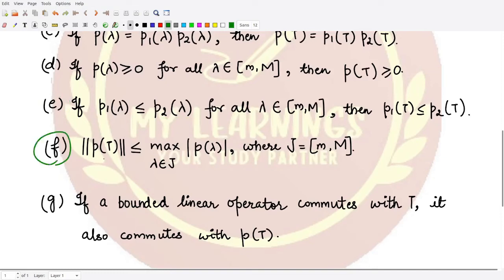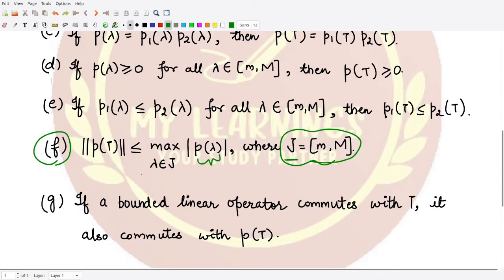The sixth property says: if J is the closed interval [m, M], then the maximum value of |p(λ)| for λ in J bounds the norm of the polynomial operator. That is, the norm of p(T) is always less than or equal to the maximum of the absolute value of p(λ) over the interval [m, M].